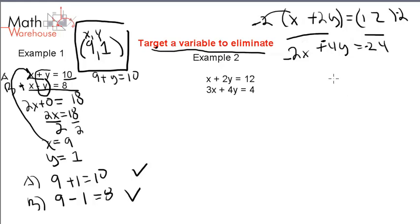What you want to do is look at your x's and y's and see if there's any way you can make them additive inverses. It's a fancy way of saying, can I make them something like 3 and negative 3, or 5 and negative 5? When we add 3 and negative 3, we get 0.